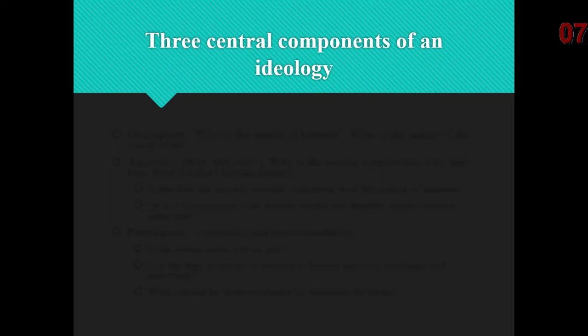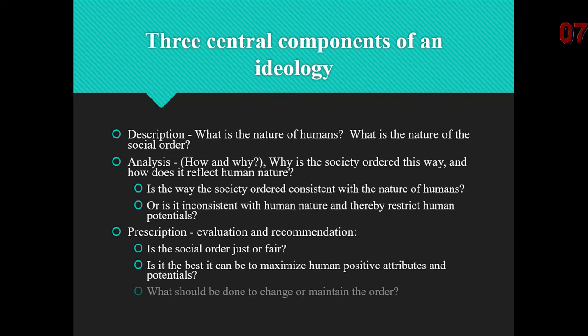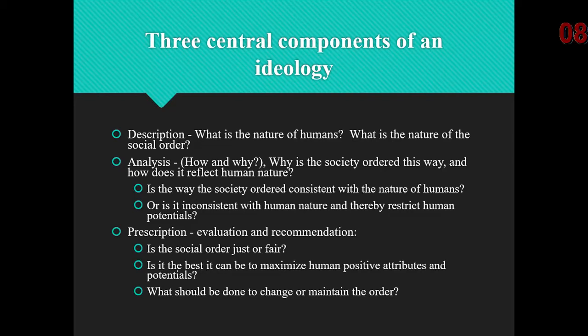There are three central components of an ideology: description, analysis, and prescription. The description addresses the nature of humans and the social order. The analysis is the how and why — why is the society ordered this way, and how does it reflect human nature? If the social order is inconsistent with human nature and restricts human potentials, that could potentially be a problem. The prescription is the evaluation and recommendation: is it just and fair, does it maximize positive attributes and potentials of the people, and what should be done to either change or maintain the order?